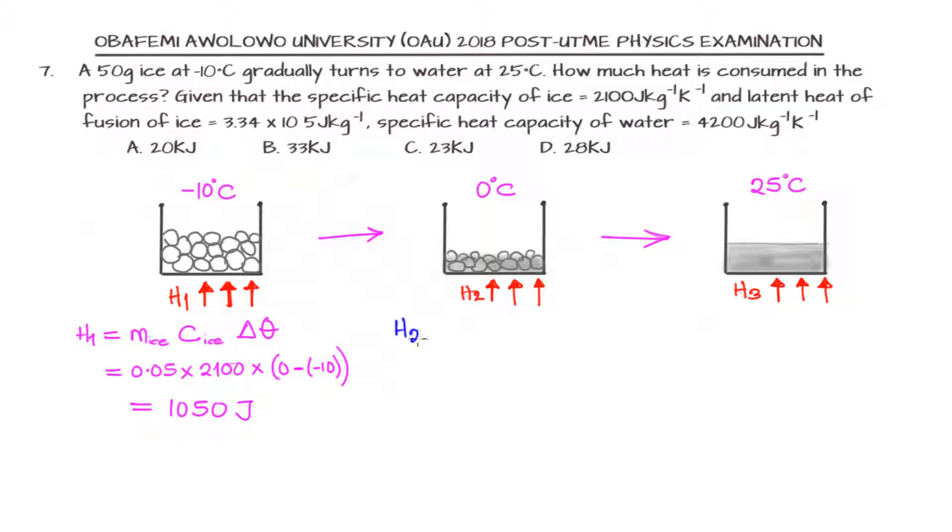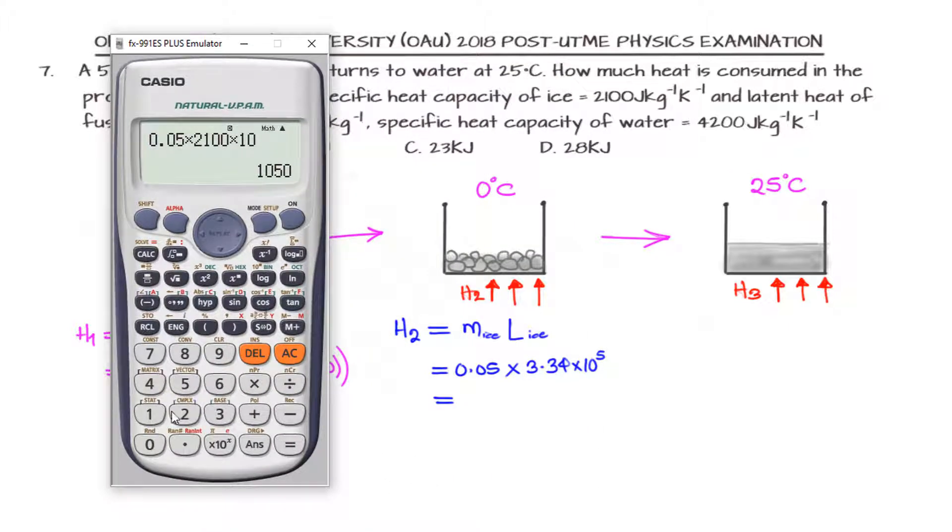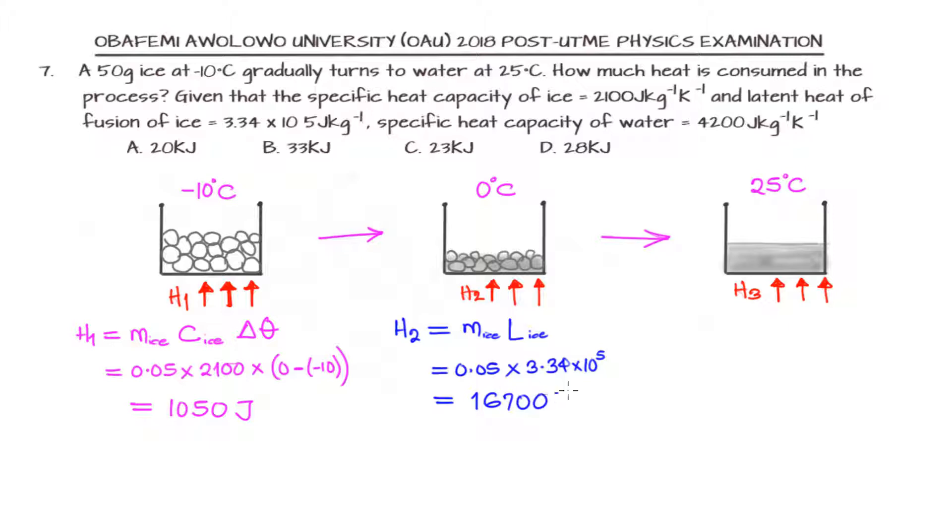In this second case, in which the ice is transitioning to water, the same mass will be in place. But instead of using the specific capacity, I'm going to use the latent heat of fusion. The temperature change here is not in common because it's at constant temperature. We have 0.05 multiplied by 3.34 times 10 raised to the power of 5 joules per kilogram. That's 16,700 joules.